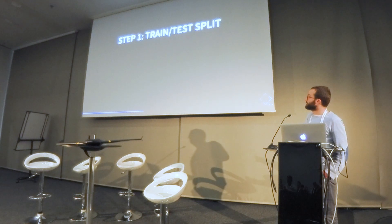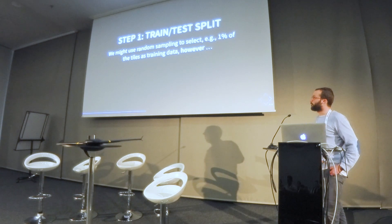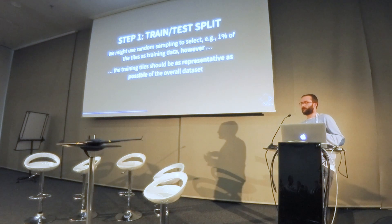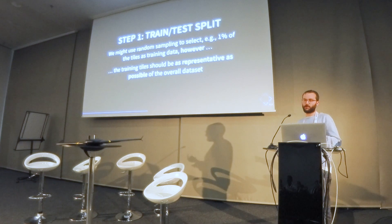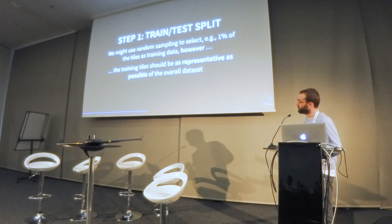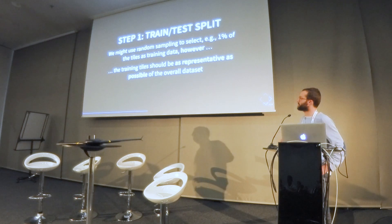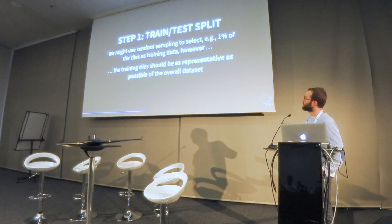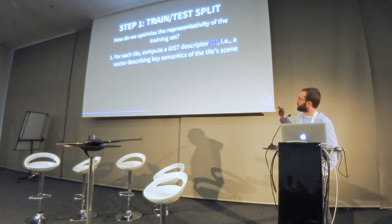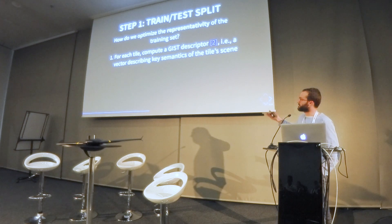Then we do the train-test split. We could use random sampling and just select 1% of the tiles. But importantly, we should have tiles that are as representative as possible of our dataset. If one tile of my 1% training set is the lake, there won't be trees there, so it's not helpful. Similarly, a tile that's entirely forest won't help the classifier much. So we have to choose the training set smartly and optimize for representativity.